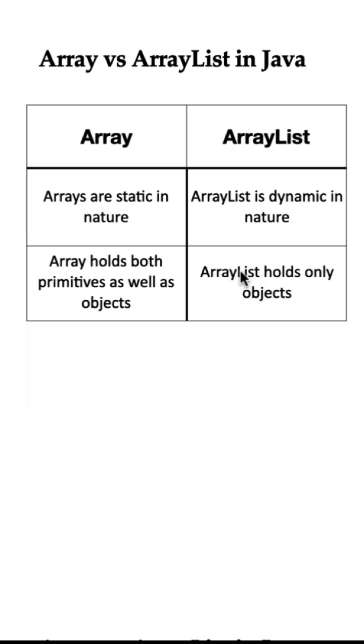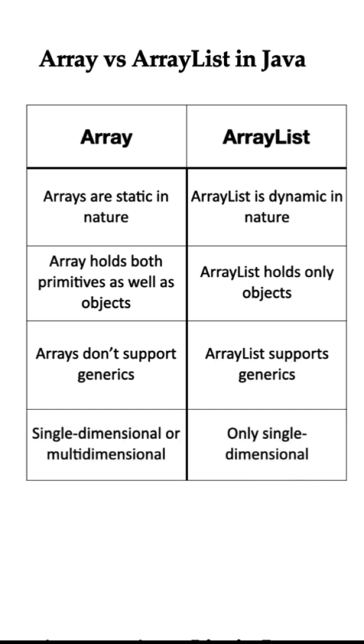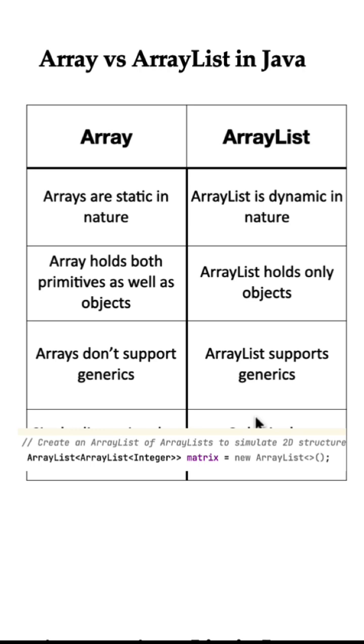Arrays do not support generics. On the other hand, ArrayList supports generics. Arrays can be single or multidimensional, whereas ArrayList is single dimensional. However, you can have an ArrayList of ArrayLists to simulate multiple dimensions.